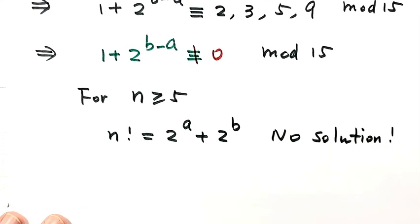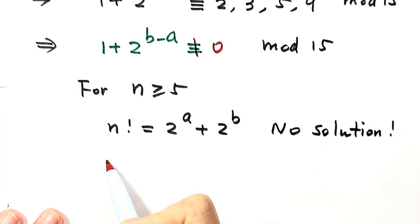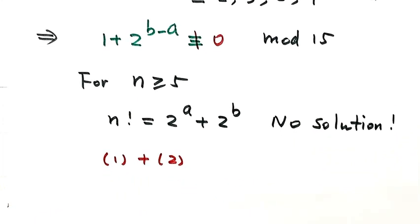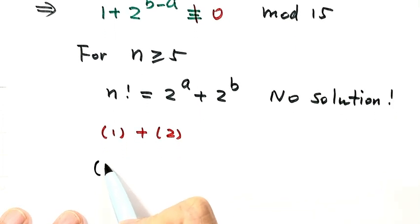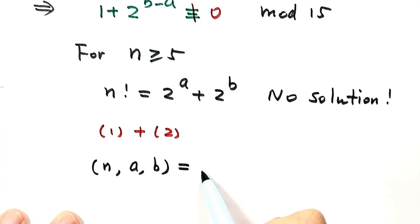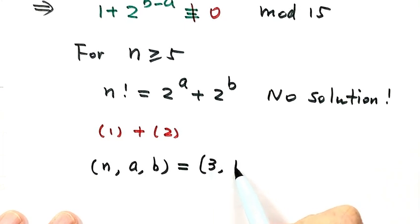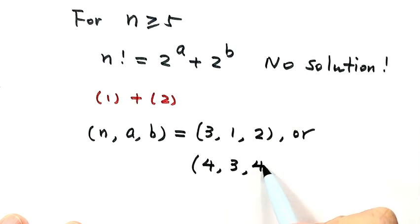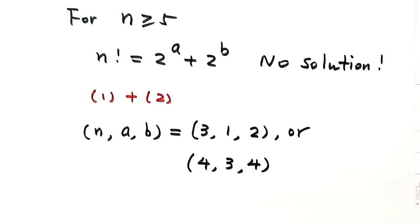Combining all cases, the complete set of solutions is: (n, a, b) = (3, 1, 2) and (n, a, b) = (4, 3, 4). These are the only solutions to the equation. Thanks for watching.